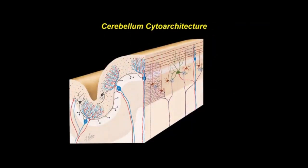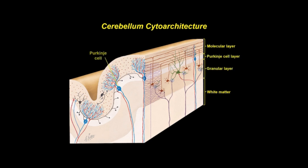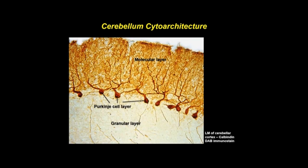The cerebellum is a bilaterally symmetric part of the brain with thin folds known as folia. It has a cortex of grey matter and a medullary center of white matter. The cortex has a uniform tri-laminar organization with an outer molecular layer, inner layer of granule cells, and a middle monolayer of large Purkinje cells. Seen here is an immunocytochemical stain for calbindin, a protein that is highly expressed in Purkinje cells.